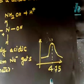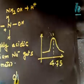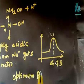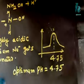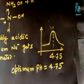So optimum pH is around 4.75, that is slightly acidic. Let us discuss the next problem.